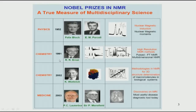NMR spectroscopy is applicable in various fields, and therefore many Nobel prizes have been given for different discoveries made in NMR. Starting from the very beginning of NMR in 1952, the Nobel prize was given to Felix Bloch and Purcell, who independently and simultaneously discovered the phenomenon of NMR spectroscopy. Richard Ernst received the Nobel prize in 1991. He is well known for Fourier transform NMR (FTNMR), the technique used routinely in chemistry, and he discovered and developed many two-dimensional NMR methods.